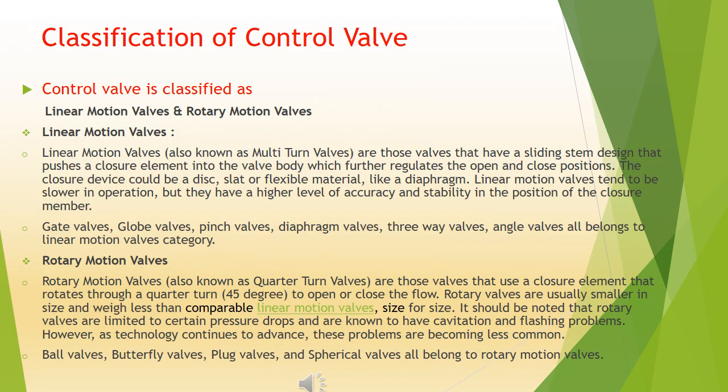Classification of control valves. Control valves are classified as linear motion valves and rotary motion valves. Linear motion valves, also known as multi-turn valves, are those valves that have a sliding stem design that pushes a closure element into the valve body, which further regulates the open and close positions.